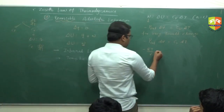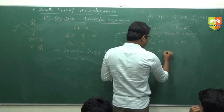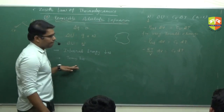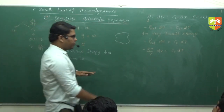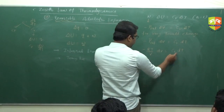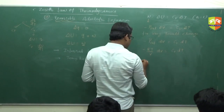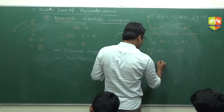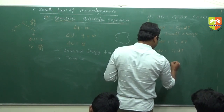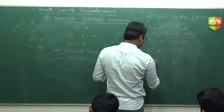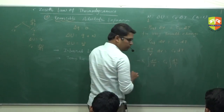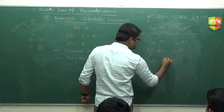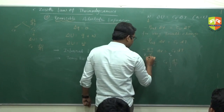Substituting RT/V for P in the expression, we get: minus R·dV/V equals C_V·dT/T. Now integrate: when temperature is T1, volume is V1; when temperature is T2, volume is V2. Integrating both sides gives us the relation between V and T in a reversible adiabatic process.